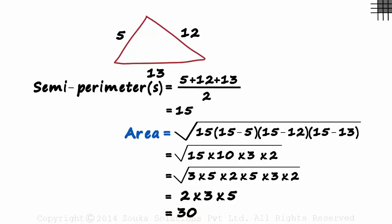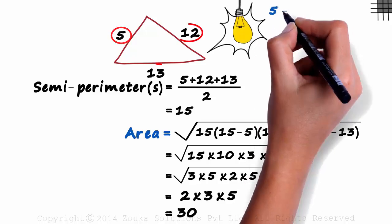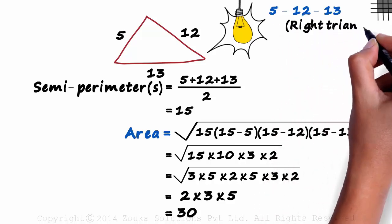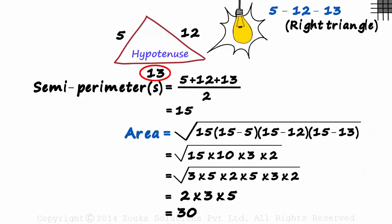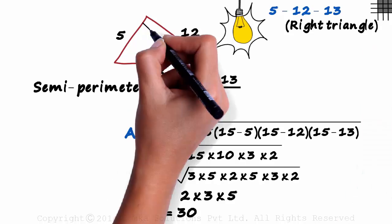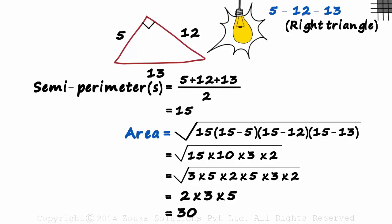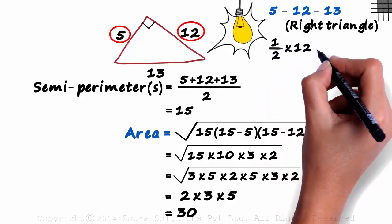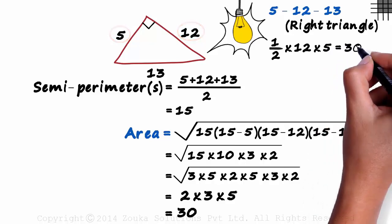That's how we use Heron's formula to find the area of a triangle. But wait — look at the numbers again. Do they ring a bell? 5, 12, and 13 form a Pythagorean triple, which tells us this is a right triangle. 13, being the largest side, is the hypotenuse. So we didn't really need Heron's formula — we could just use the half base times height formula and get the answer as 30 square units.